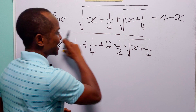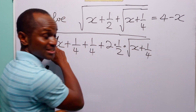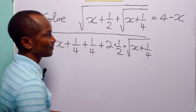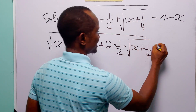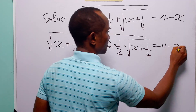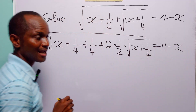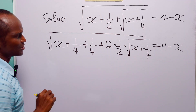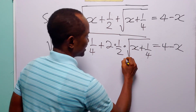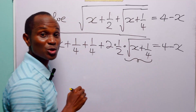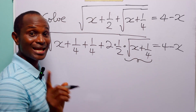So we have not changed the left-hand side of this equation in any way. On the right-hand side we still have 4 minus x.